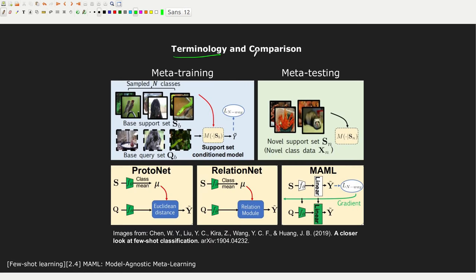Let's look at some terminology and a comparison between MAML, ProtoNet, and Relation Net. MAML uses slightly different terminology — meta-training and meta-testing — but we are always in the same setting. We have a certain number of classes, a support set, and a query set. A task is made of a support and a query, where the support contains a specific amount of labeled data, and the query is another set of data that can be labeled or not depending on whether we are in training or testing.